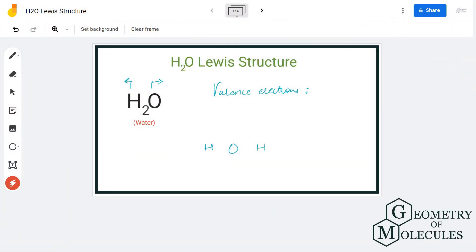Hi guys, today in this video we are going to look at the Lewis structure for the H2O molecule. It's the chemical formula for water and is made up of one oxygen atom and two hydrogen atoms. To determine its Lewis structure...